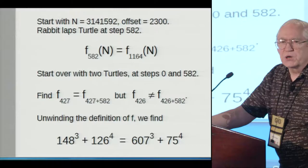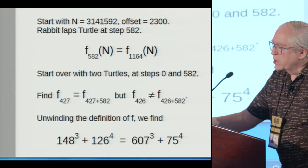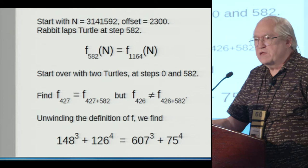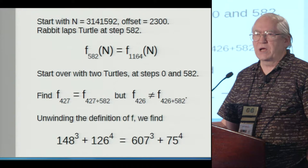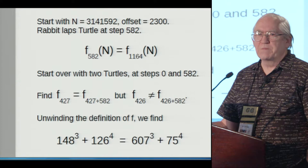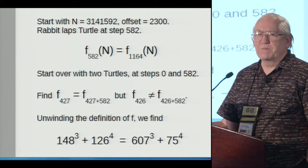So with the particular function I had defined, we start with n equals this random number, 314 and so on. An offset of 2300, and that's because I tried the first 2300, rabbit laps turtle at step 582. That is to say rabbit comes up from behind and stomps on the same cell as turtle in the graph after they've run 582 steps from these two values. And that means 582 applications of F is the same as 1164 applications of F.